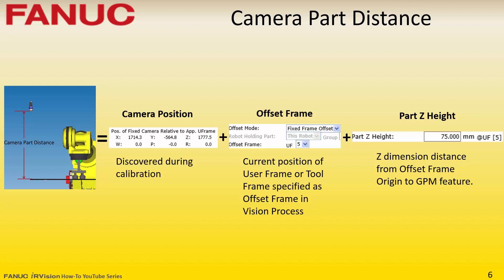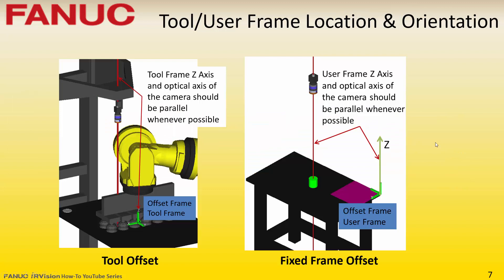By calculating the camera-to-part distance in this way, the user is not required to directly measure the camera-to-part distance, which would be very difficult to do accurately. When possible, the offset frame Z axis and the optical axis of the camera should be parallel. With perspective calibration, the camera can be at an angle to the offset frame and accurate information is still calculated. The Z axis of the offset frame can point away from or towards the camera.